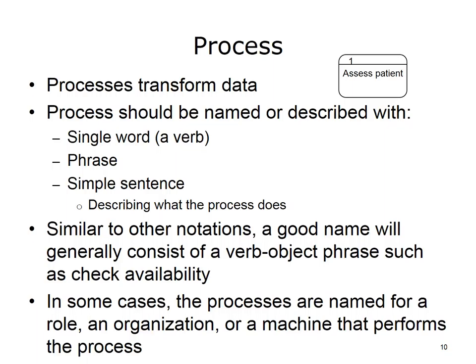Processes transform data. The process should be named or described by a single word, a verb phrase, or simple sentence that describes what the process does. A good name will generally consist of a verb-object phrase, such as "check availability." In some cases, processes are named for a role, an organization, or a machine that performs the process. Processes are given a number in the upper right-hand corner as an identifier — this does not imply sequence. Optionally, processes can also have a lower section indicating the role, machine, or physical location where the process is undertaken.